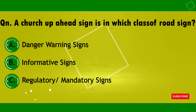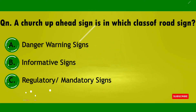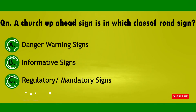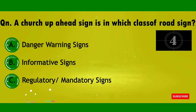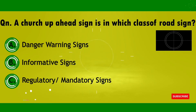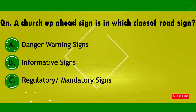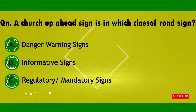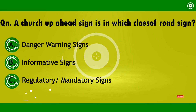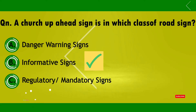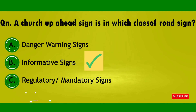Our last question for the day: a church-up-ahead sign is in which class? Is it a danger warning sign, an informative sign, or a regulatory sign? To answer correctly, one needs to understand the shapes of the five classes of traffic signs. A danger warning sign is identified by a triangle, an informative sign by a rectangle, and a regulatory or mandatory sign by a circle. Therefore, a church-up-ahead sign is informative because of its rectangular shape, and it informs motorists of the existence of a church ahead.